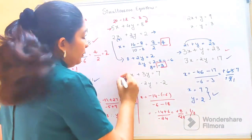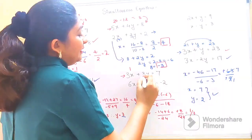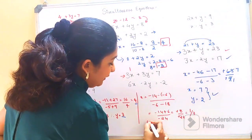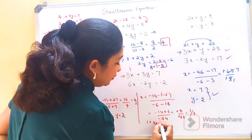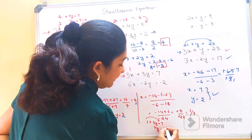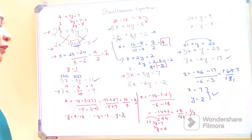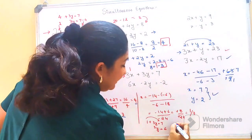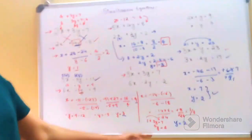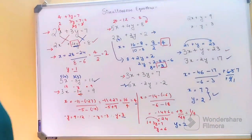Now substituting x as 1/3: 3 into 1/3 gives 1, and we keep 3y as is, plus there's a minus 7. So 1 plus 3y equals 7. Shifting the 1 across: 3y equals 6. Dividing both sides by 3, y equals 2. Substituting back verifies the answer is correct.